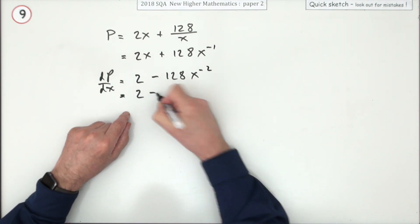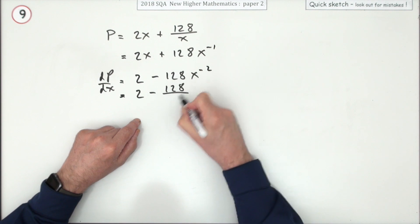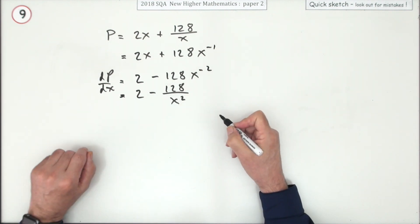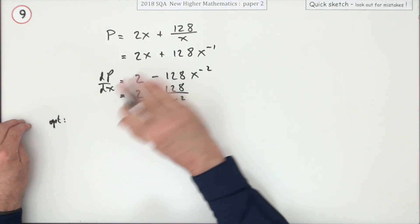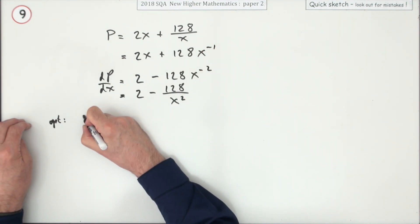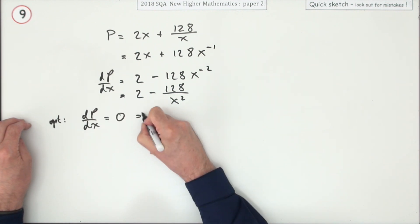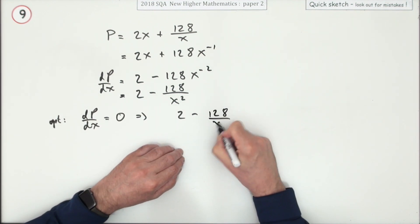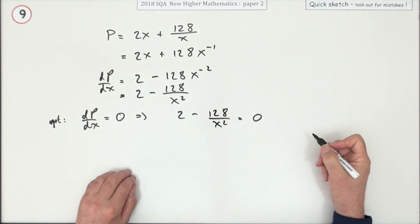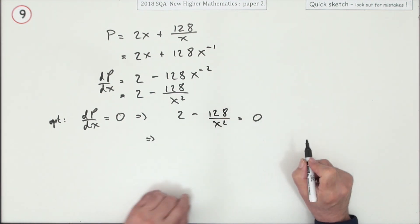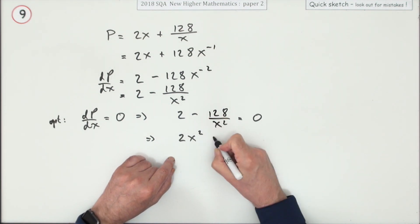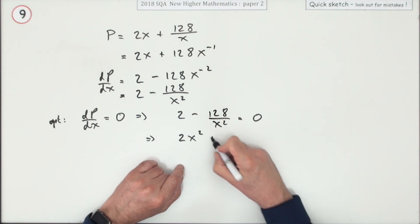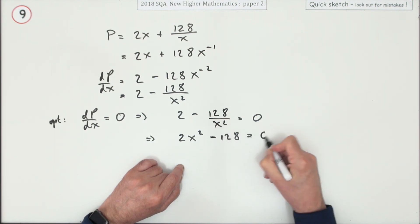Since I'm going to be using that, I'm going to rewrite it as 128 over x squared. Then if there's an optimum value at all, it'd have to be a stationary value somewhere, so dP/dx should equal zero, which means 2 minus 128 over x squared should equal zero. Don't like the look at that because it's got fractions, multiply everything by x squared: 2x squared minus 128 equals zero.